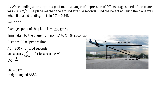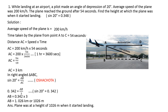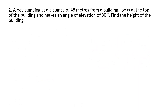In right-angle triangle ABC, we know AC = 3 km and we need to find AB. With respect to angle C, AB is the opposite side and AC is the hypotenuse, so we use sin 20°. Sin 20° = AB / AC, and the value of sin 20° is 0.348. Substituting and simplifying, AB = 1.026 km. Converting to metres gives 1026 metres. So the plane was at a height of 1026 metres when it started landing.